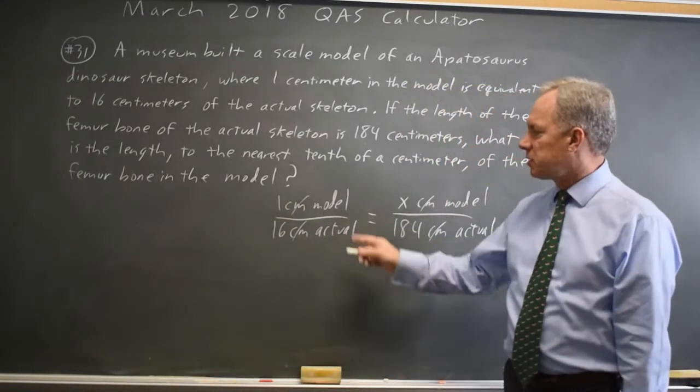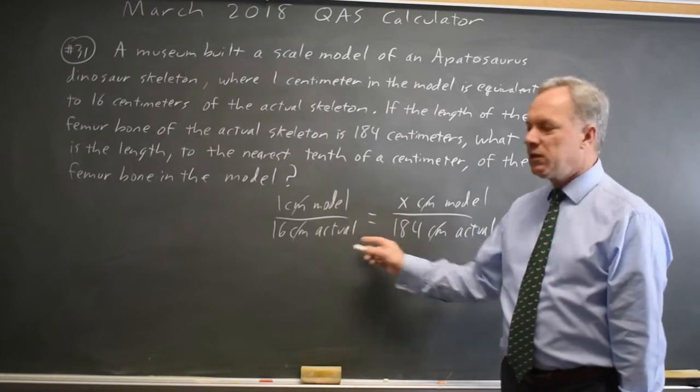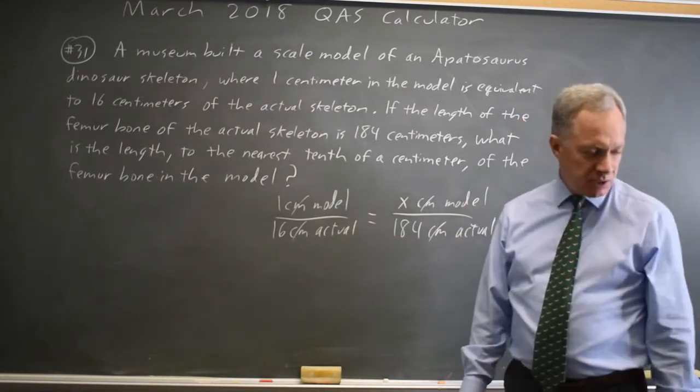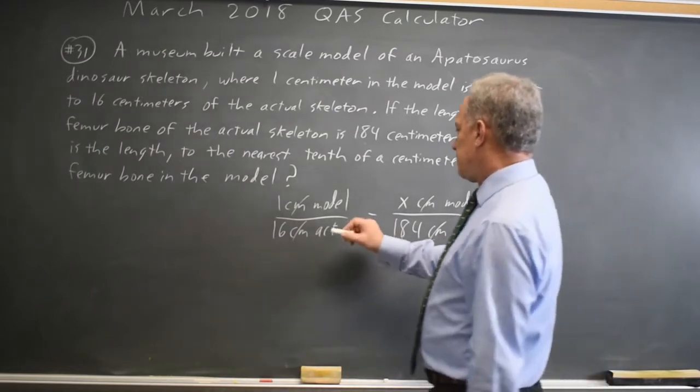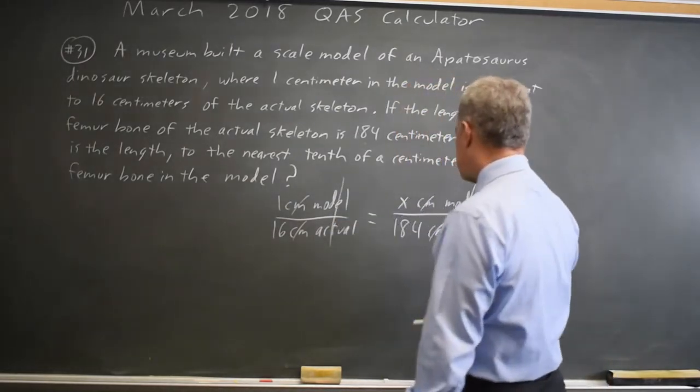Now I know I haven't flipped it because the left is model over actual and the right is model over actual, so I haven't messed this up. To solve for x, model over actual is the same on both sides,